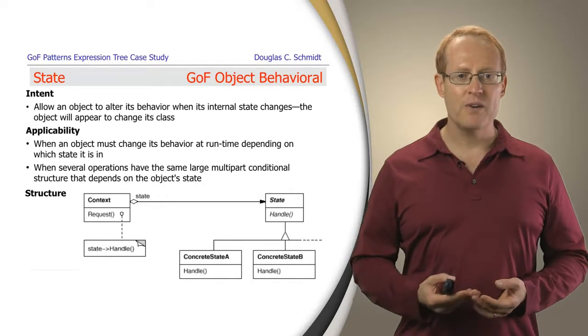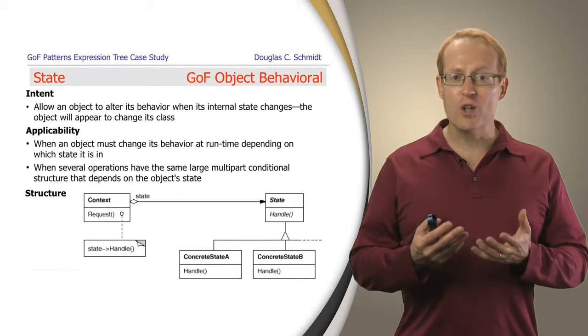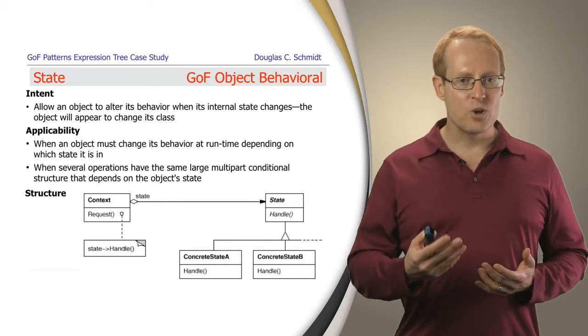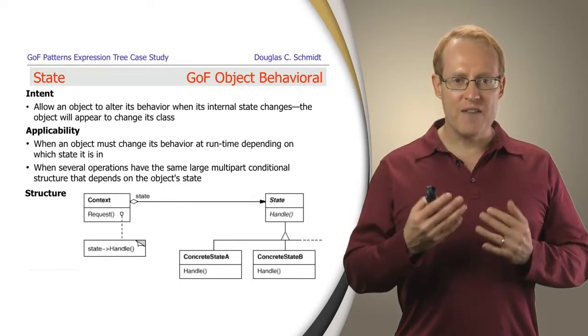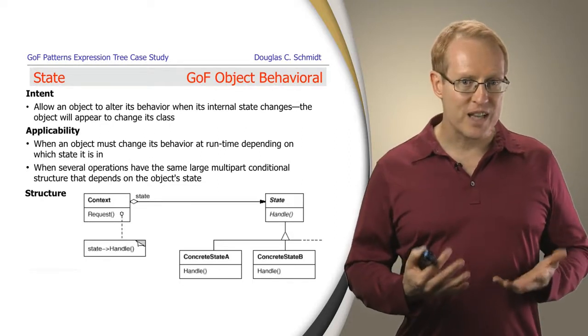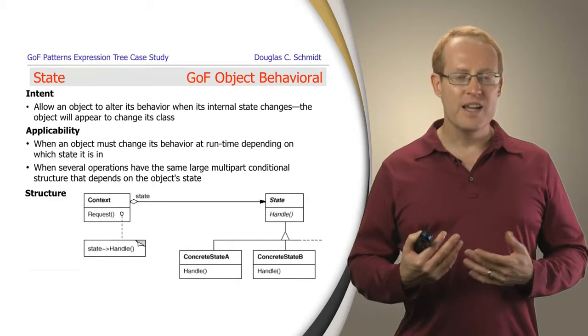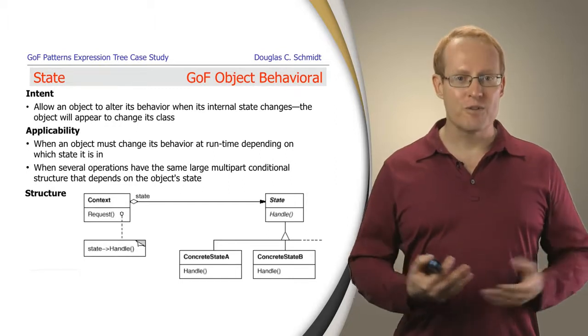The whole pattern that guides this type of design is a Gang of Four pattern called state. It's an object behavioral pattern. And the intent of this pattern is to allow an object to appear to alter its behavior when its internal state changes. Its interface doesn't change at all, but its behavior changes. And the object in some sense almost appears as if it's changing its class because its behavior will be different. If you call the format method or the make tree method in different states, you'll get very different results.